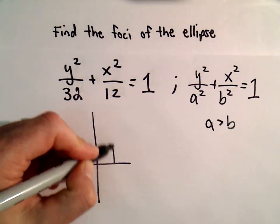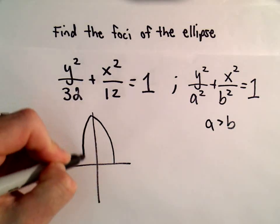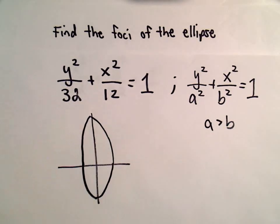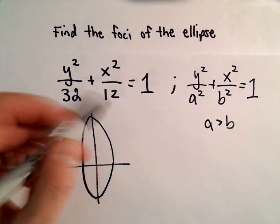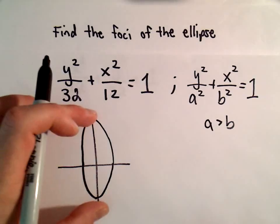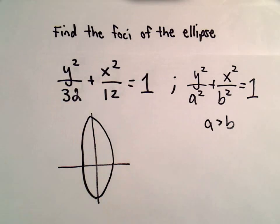So it's going to be taller than it is wide. You can find x and y intercepts and graph it to come to that same conclusion. There's a major vertical axis.